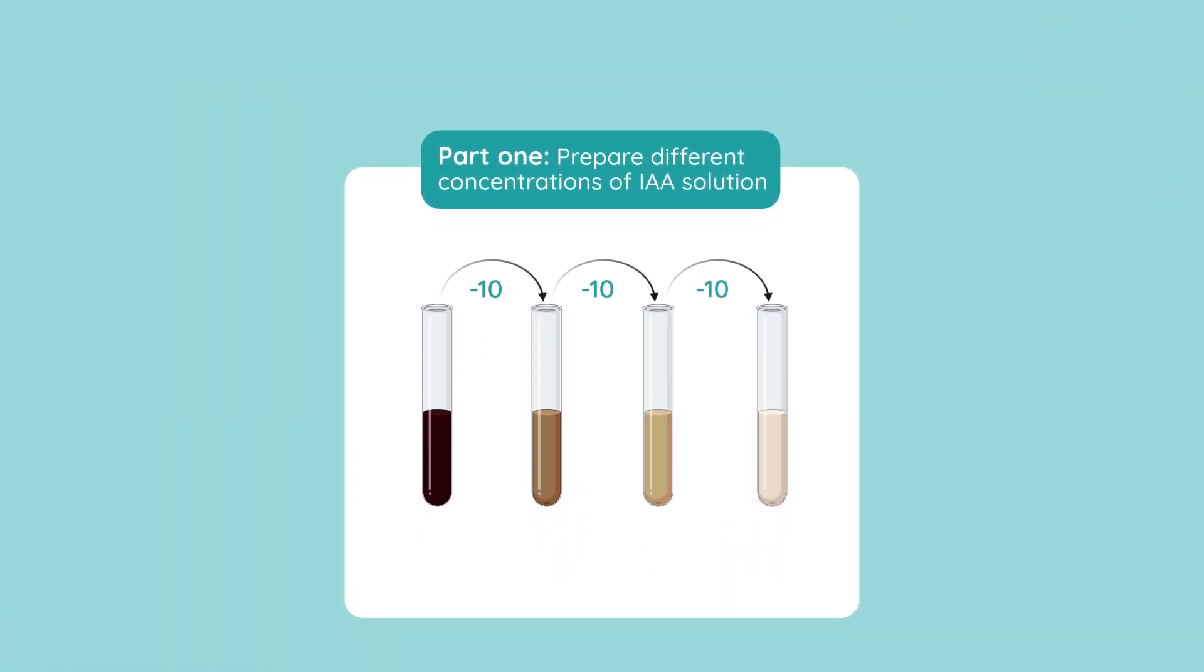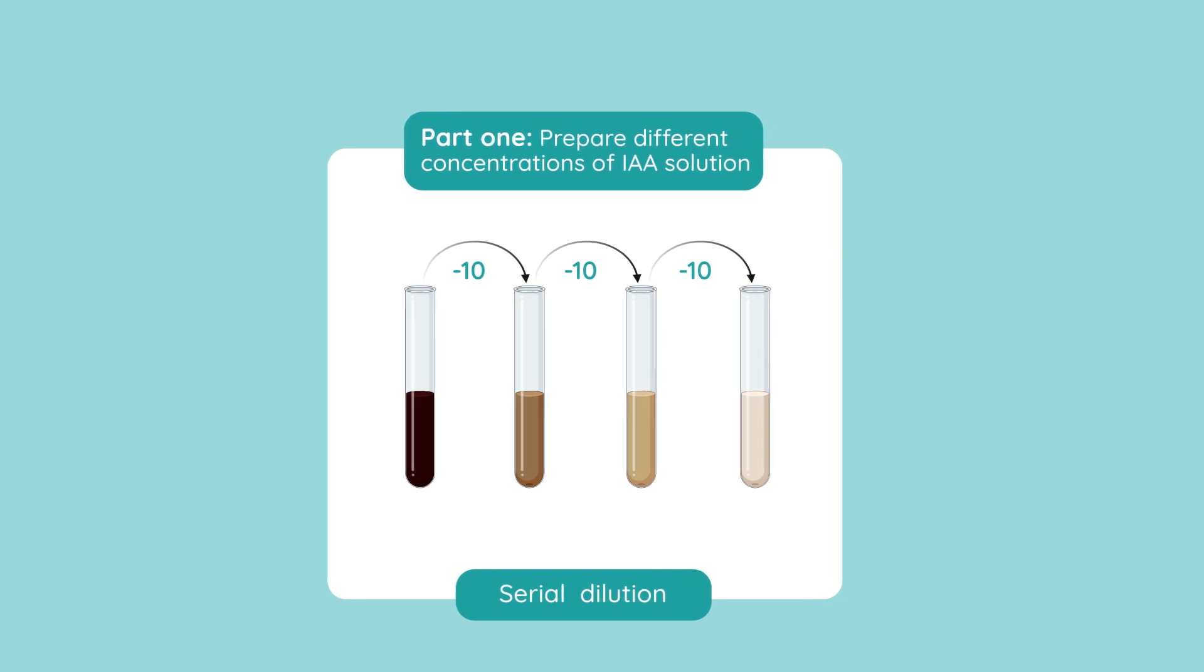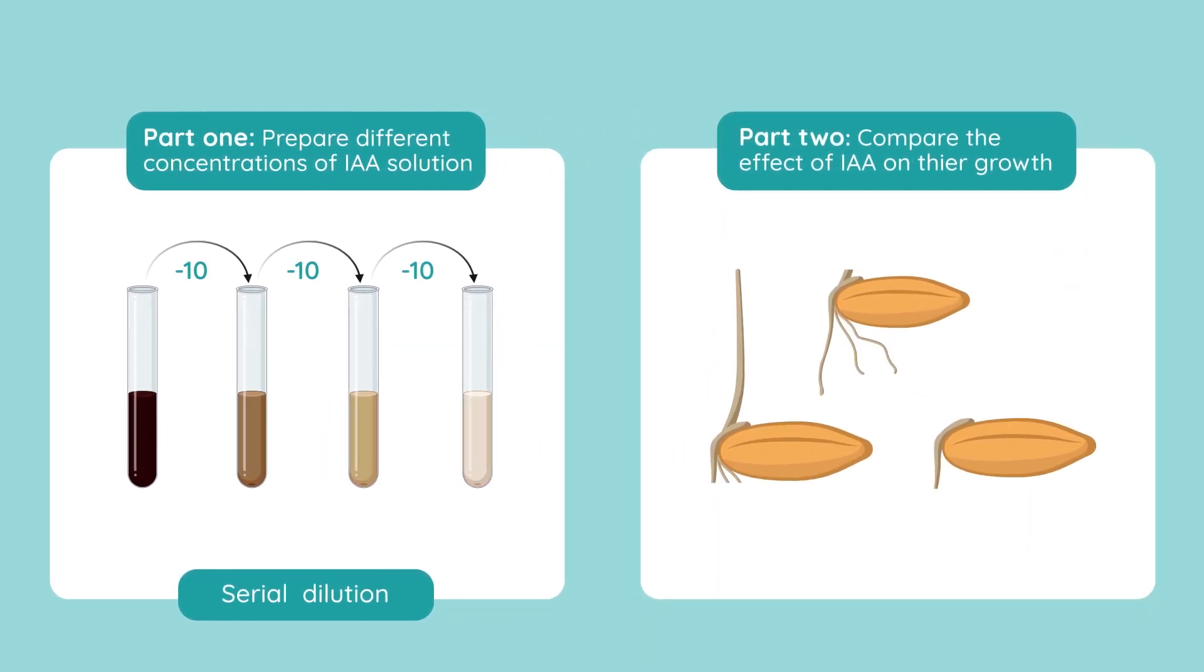In Part 1 of this experiment, we prepare different concentrations of the IAA solution. We do this through serial dilution, where each concentration is 10 times more dilute than the previous one. In Part 2, the effect of these concentrations are used on the roots and shoots of seedlings, and the effect on their growth is compared to a control.